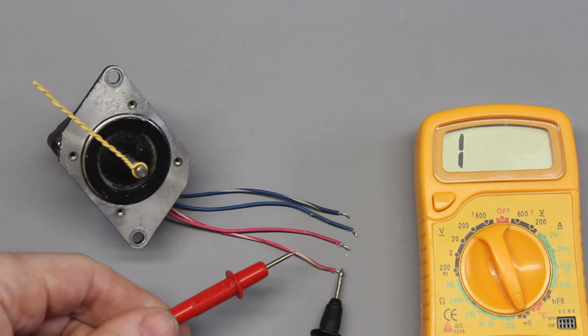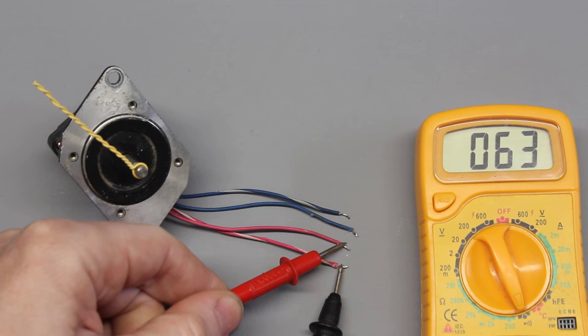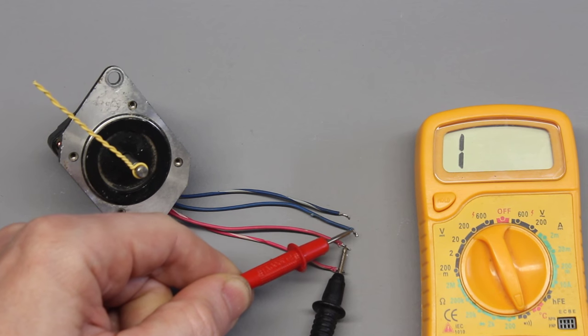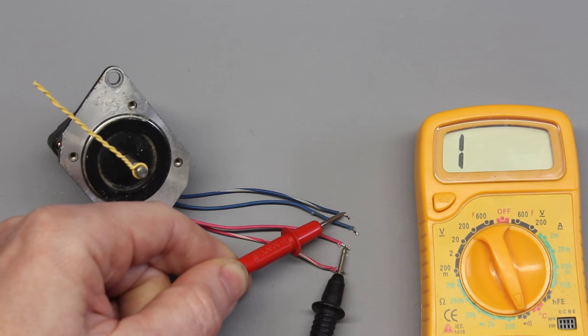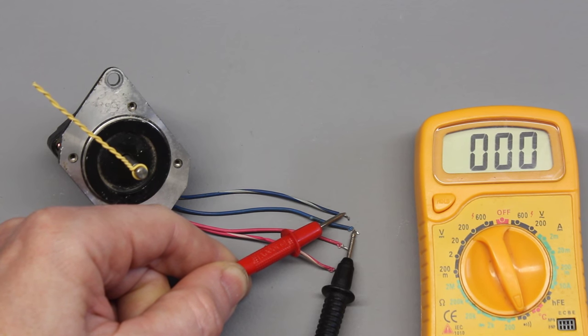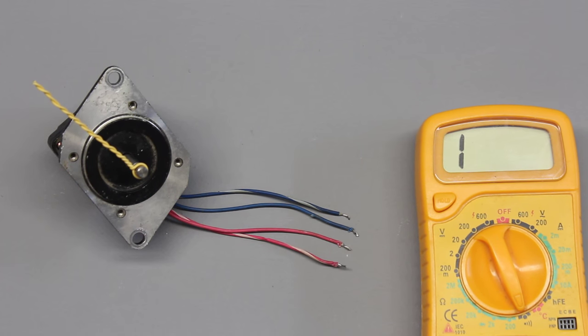In order to connect the stepper motor to the driver board, you need to know which pair of cables belongs to each phase. Switch your multimeter to continuity measurement to find those pairs. At this type, the red and the blue colored pairs are internally connected to a phase.